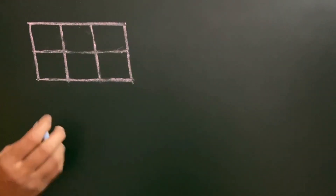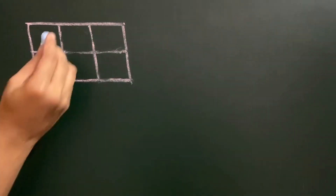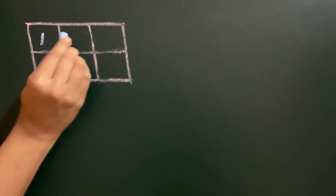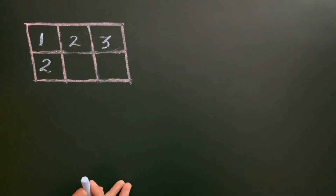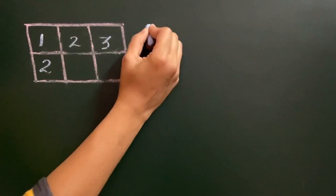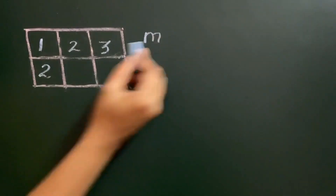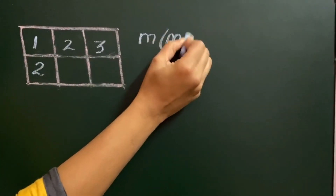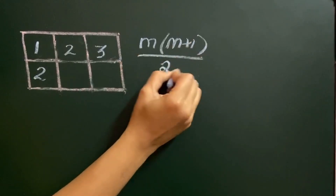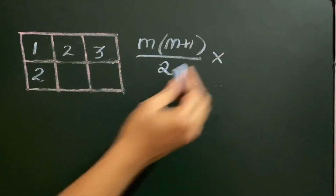Let's see how to count parallelograms in this figure. To count the parallelograms, let's see how many rows and columns there are. Here there are 2 rows and 3 columns. To find the number of parallelograms, there is a formula: m, the number of rows, into n, the number of columns.